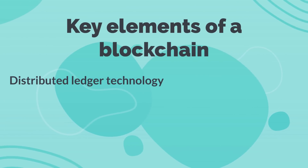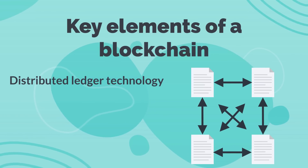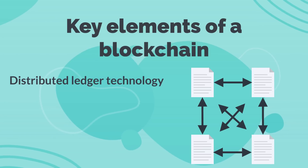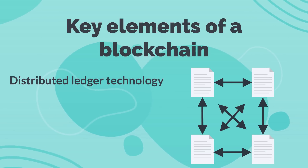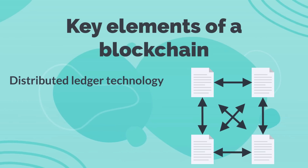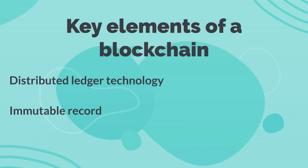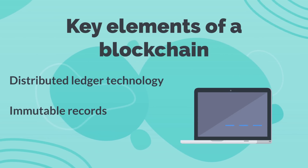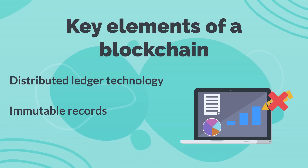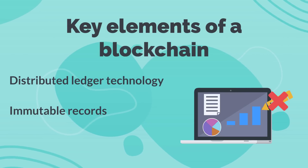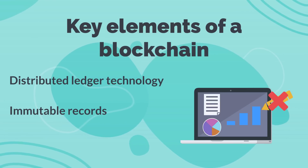Distributed ledger technology: all network participants have access to the distributed ledger and its immutable record of transactions. With this shared ledger, transactions are recorded only once, eliminating the duplication of effort that's typical of traditional business networks. Immutable records: no participant can change or tamper with a transaction after it's been recorded to the shared ledger. If a transaction record includes an error, a new transaction must be added to reverse the error, and both transactions are then visible.